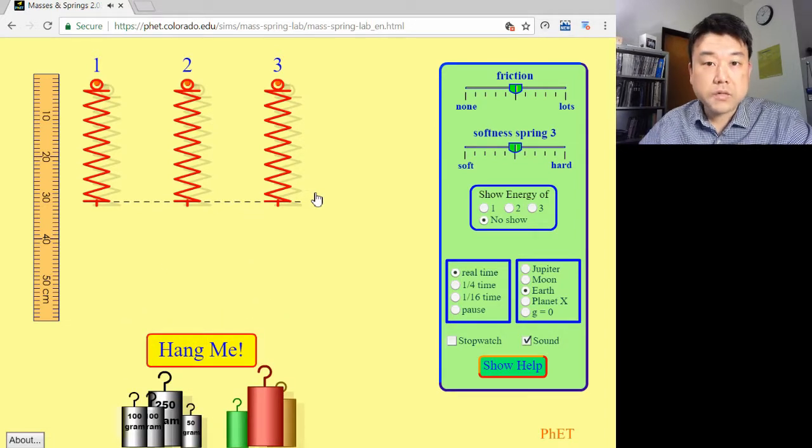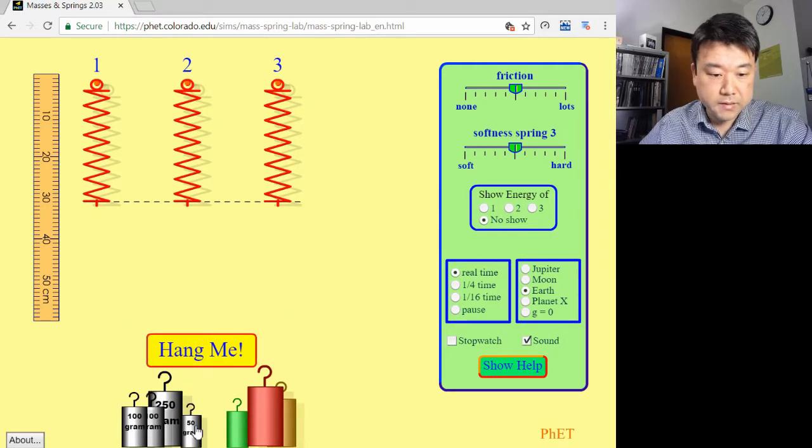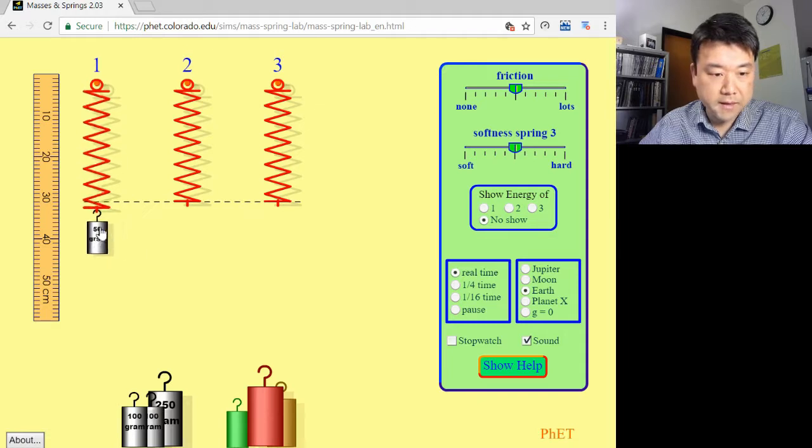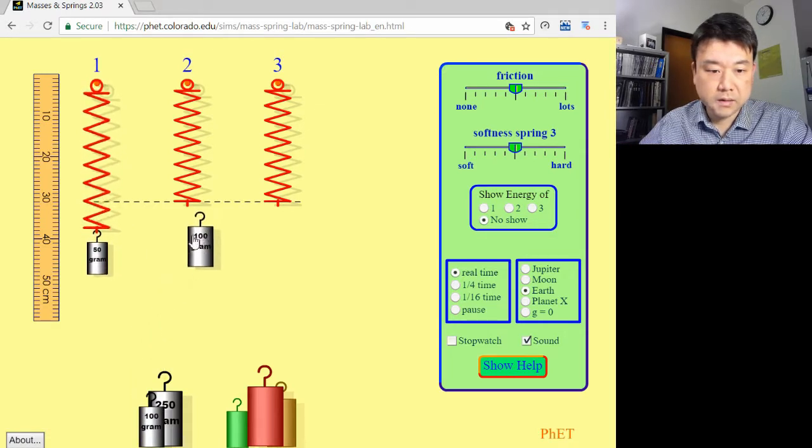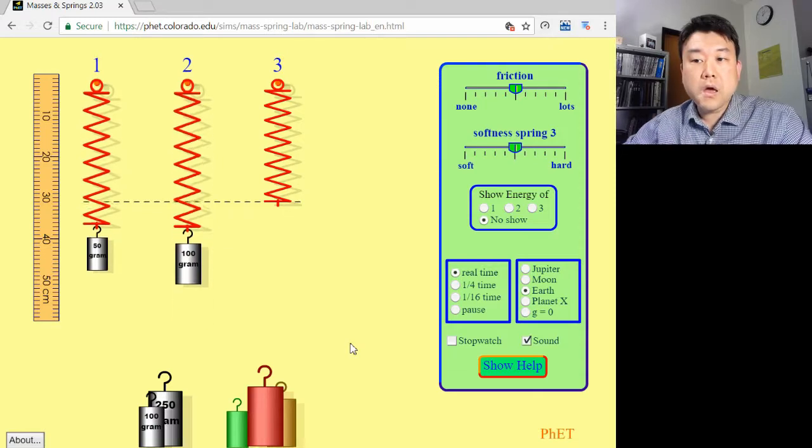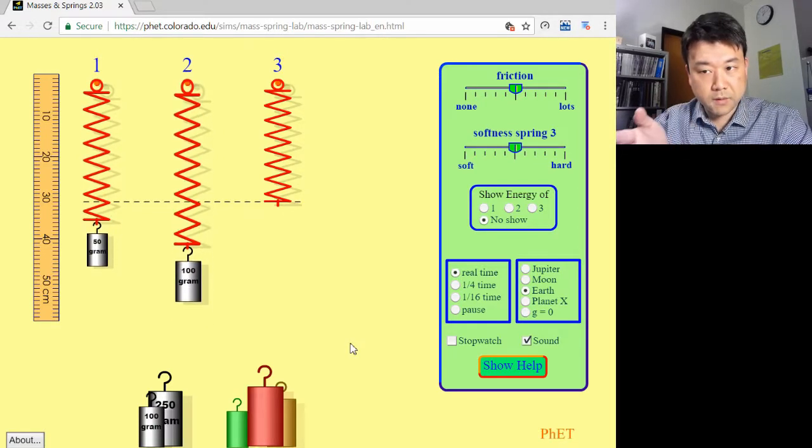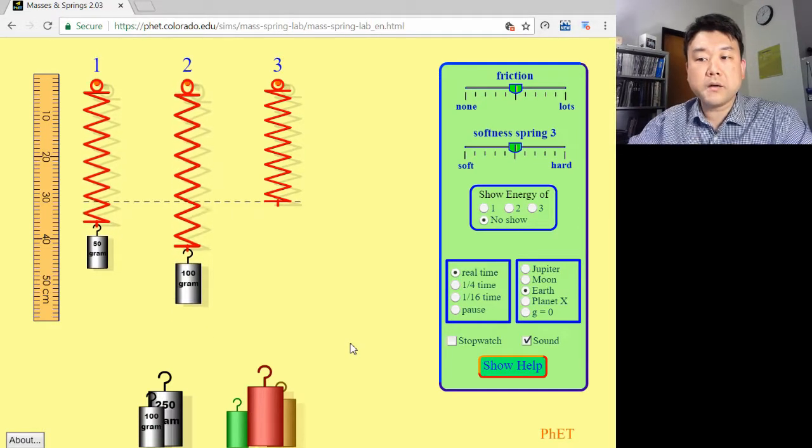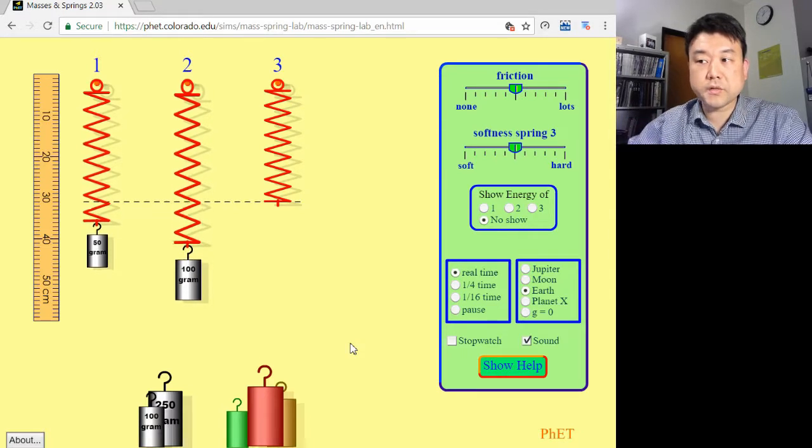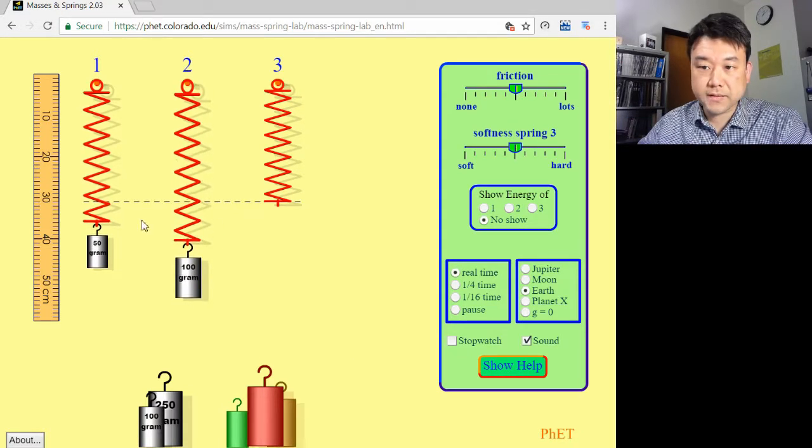All right, so this is the masses on springs. When you hang masses on them, you see an illustration of Hooke's Law. Where the masses come to a stop are equilibrium positions. This is where the net force on the mass is zero.